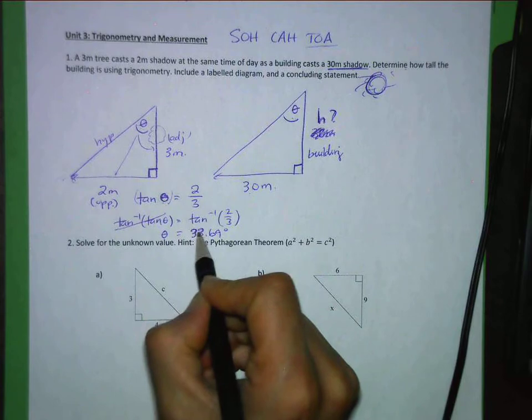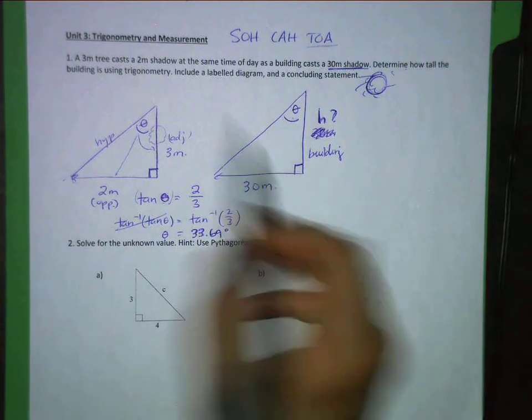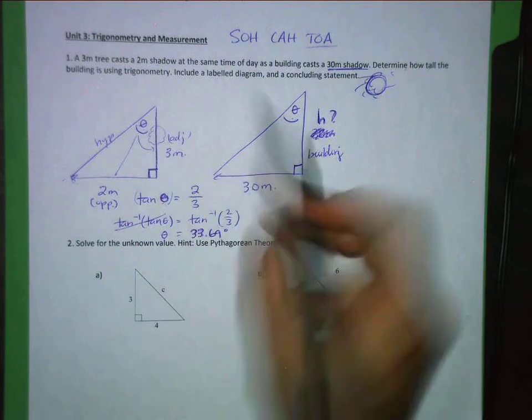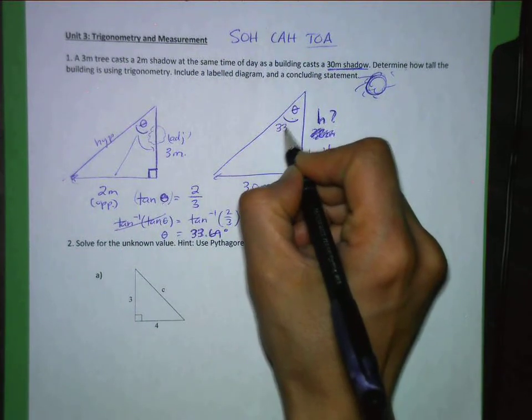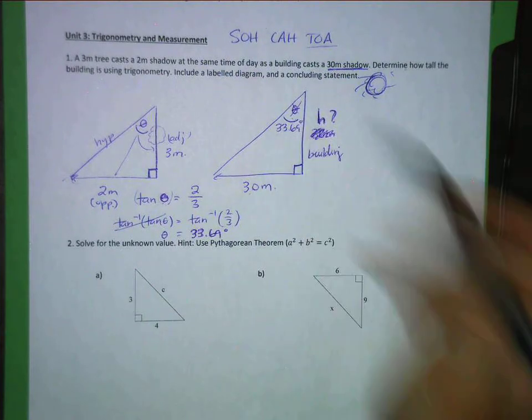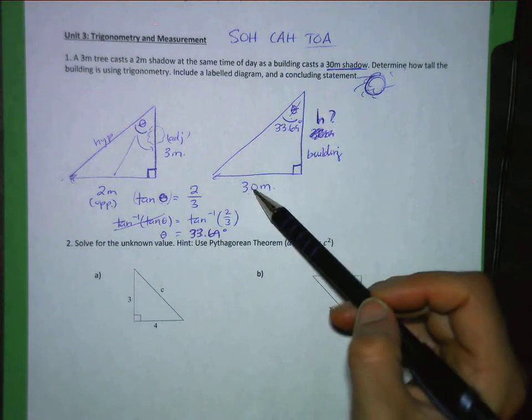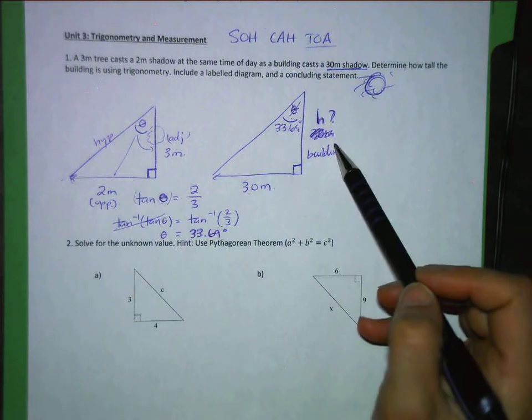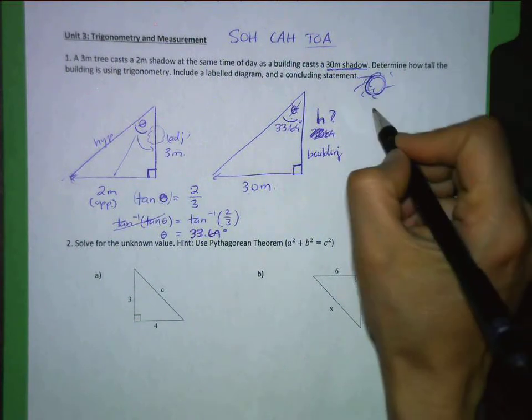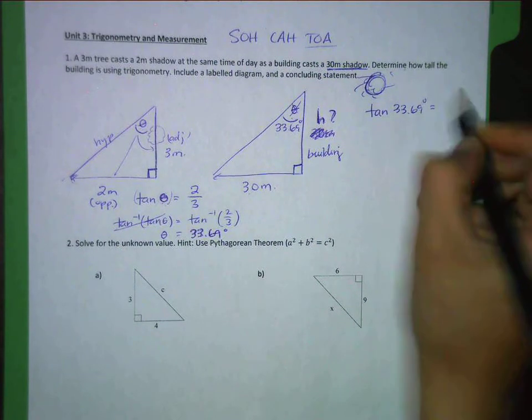Alright. Now I'm going to look at this triangle. So now, since I know this angle, I know that this is 33.69. It's not theta anymore. It actually is a number. So this is the angle I'm using. I have the opposite. Now I want to find the adjacent.